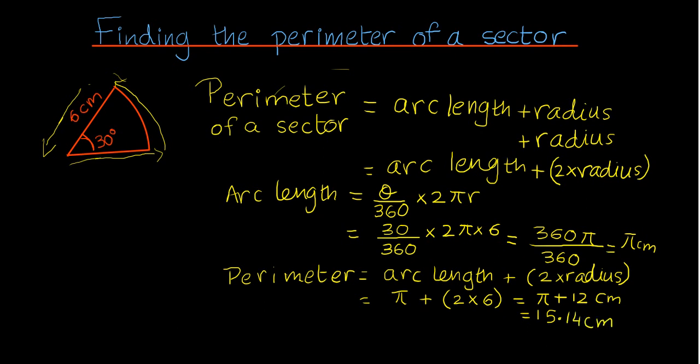So just to summarize, in order to find the perimeter of the sector, what you need to do is find the arc length and add it to the two radii on either side of the arc length. The arc length, the formula for it is over here—angle over 360 times 2πr. We've substituted here 30 over 360 times 2π times 6. I left it in terms of π, the answer, and the reason for this is this would reduce the rounding error as I use the arc length to find the perimeter.